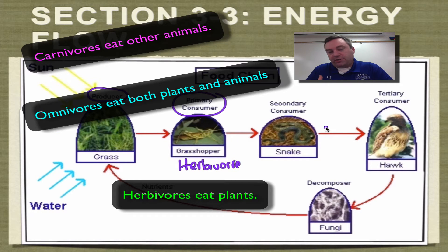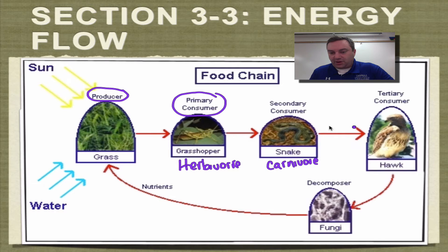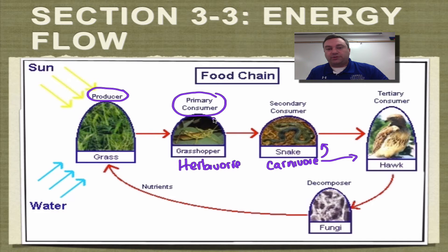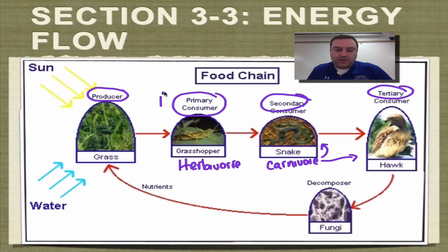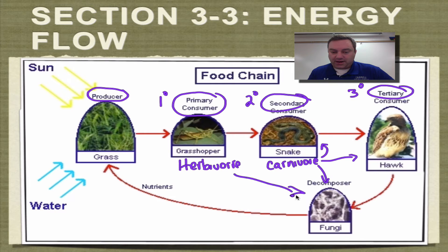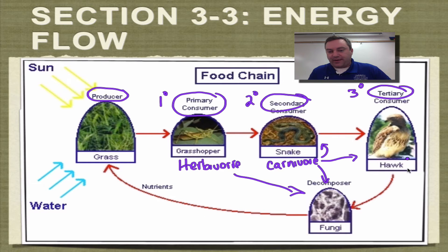The next levels are going to be omnivores or carnivores. In this example, we've got a grasshopper, then a snake — which is a carnivore — and then a hawk that eats the snake, also a carnivore. Your first level of consumer is called primary; your second level is called secondary; and the third is tertiary. If you don't want to write these fancy words, one degree symbol means primary, two degree symbols means secondary, and three degree symbols means tertiary. Eventually, the hawk, snake, and grasshopper will pass away. Then a decomposer — in this case a fungus — will break down the organism, and the nutrients will return back to the soil and go back into the cycle.